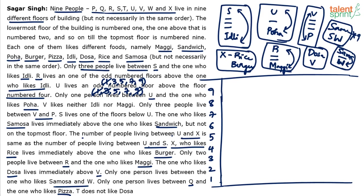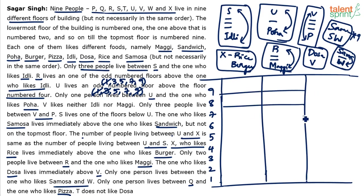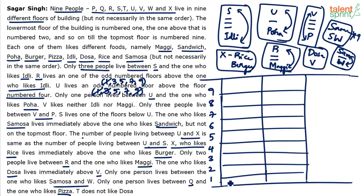So there are only two possibilities for U: 5th floor or 7th floor. Let's try both cases.